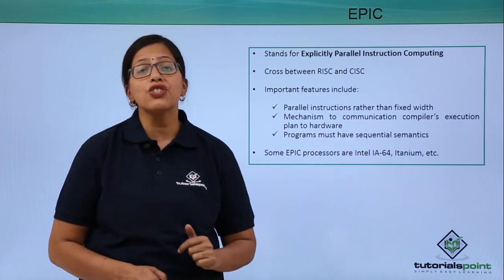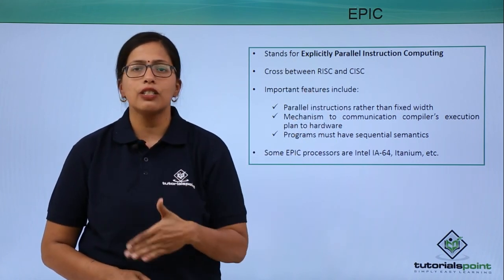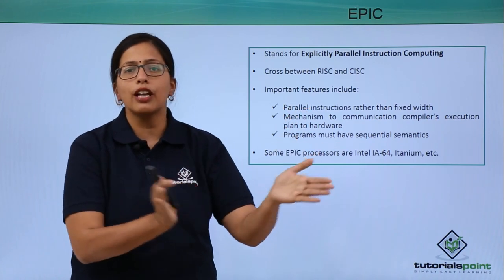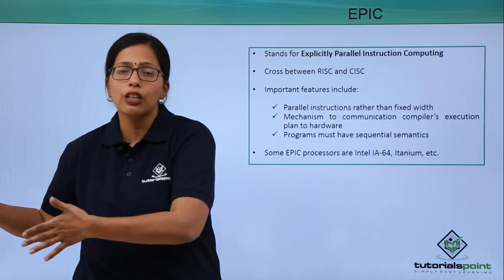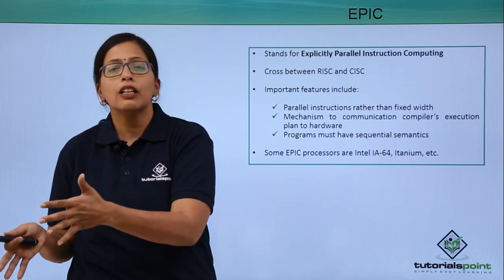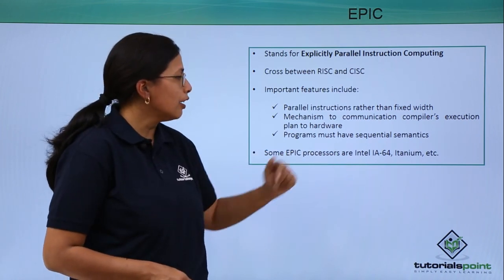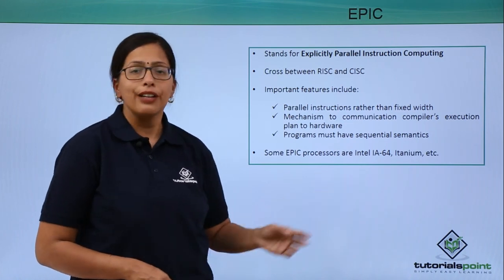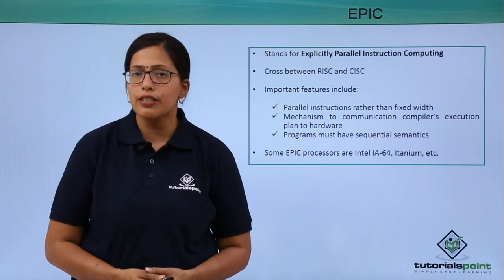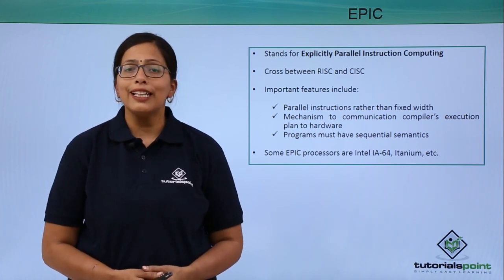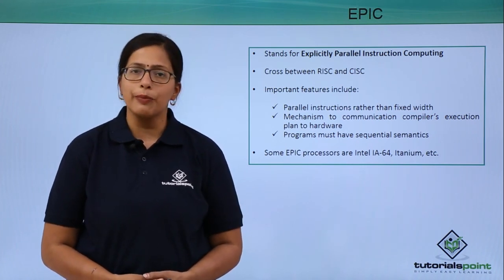In EPIC, programs must have sequential semantics — they must be written in a sequential way, not jumping between segments scattered across many lines of code. Examples of EPIC processors are Intel IA-64 and Itanium. In this video, we have seen the different categories of microprocessors based on the length and complexity of their instruction sets. In the next video, we are going to discuss primary memory.